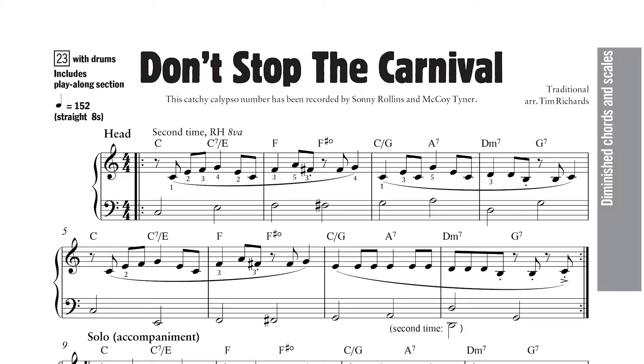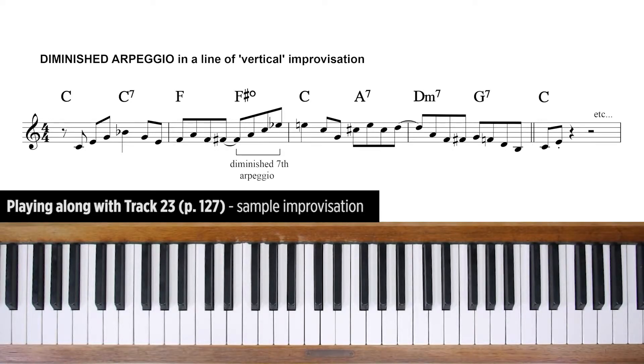The F sharp diminished seventh chord is a link between the F and the C chord. When improvising vertically over chord sequences like this, it's always effective to include notes from the diminished arpeggio as part of your line. I'll demonstrate this over the bass and drums backing from the solo section of Don't Stop the Carnival, track 23 on the CD.